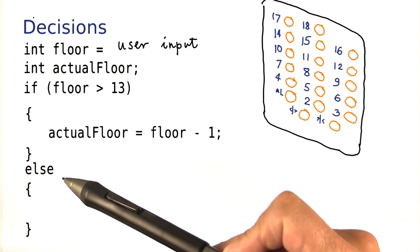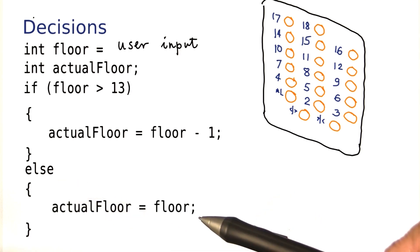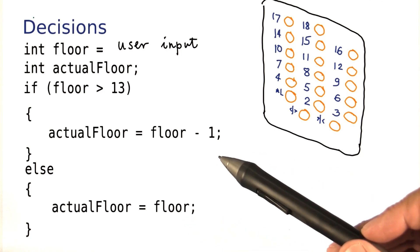On the other hand, if the condition is false, then we'll carry out the actions in the else part of the statement. In which case, the actual floor number equals the floor number without an adjustment. And that's all there is to it.